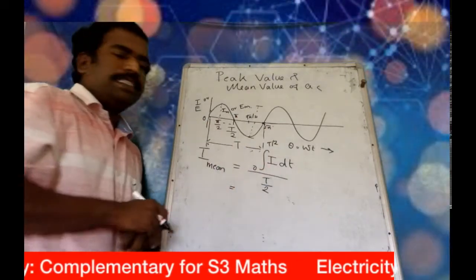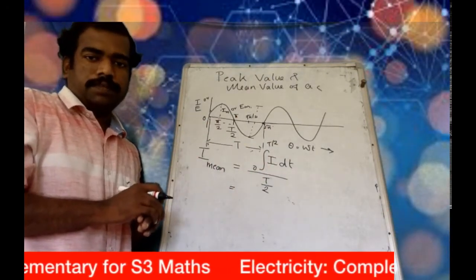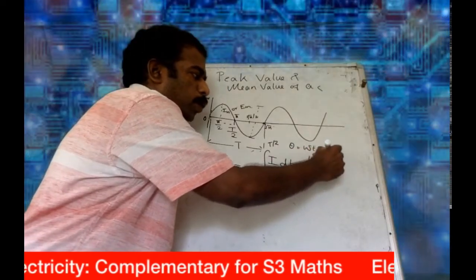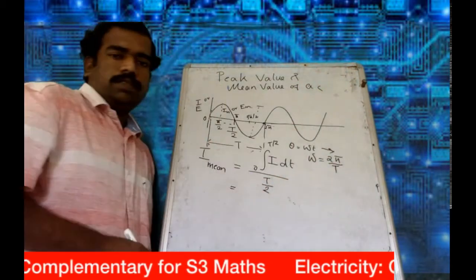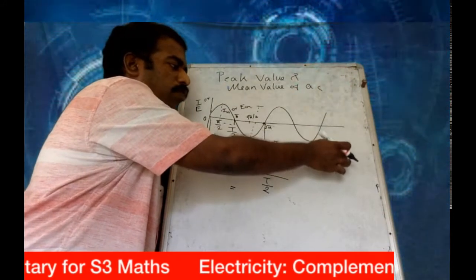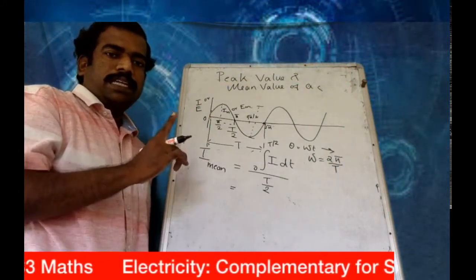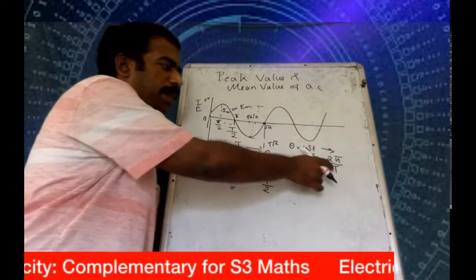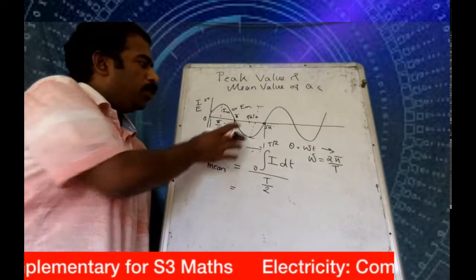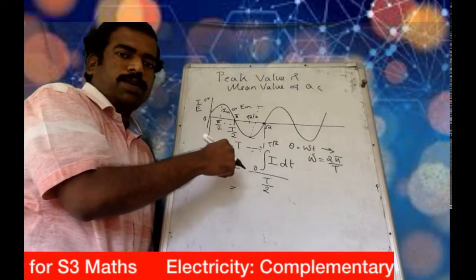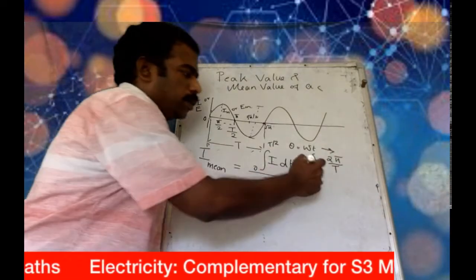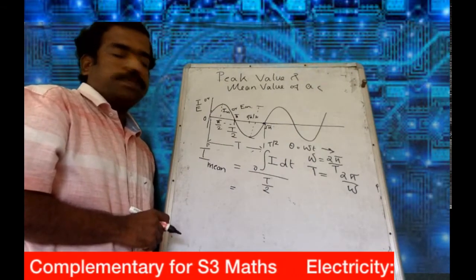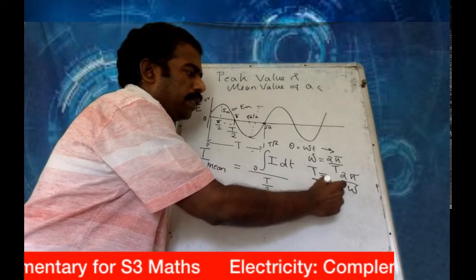Substitute the expression and integrate. We know that ω equals 2π/T, so T equals 2π/ω. The period T/2 is therefore π/ω. Substitute T/2 as π/ω in the integral expression — the period to complete one full rotation gives T = 2π/ω, so T/2 = π/ω.